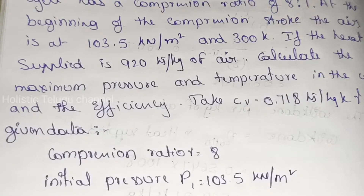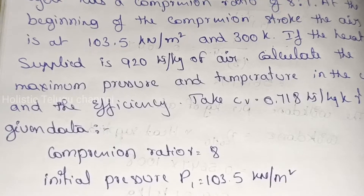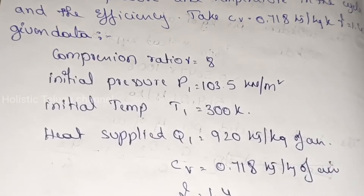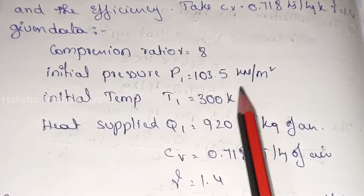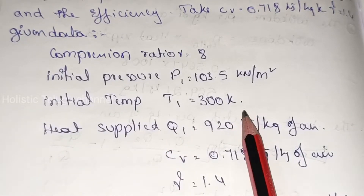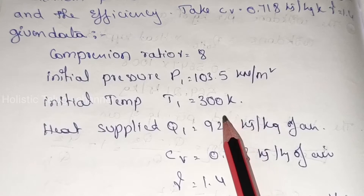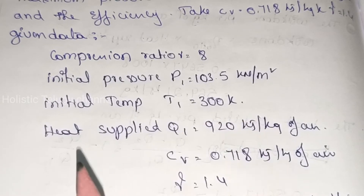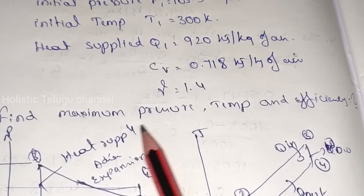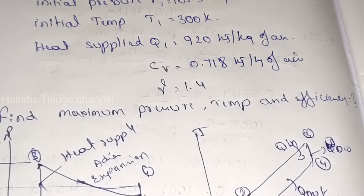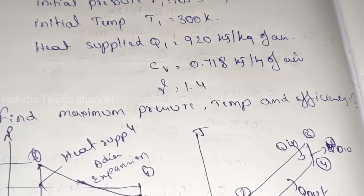So, the given data: compression ratio is 8, initial pressure P1 = 103.5 kN/m², initial temperature T1 = 300 Kelvin, heat supplied Q = 920 kJ/kg, Cv = 0.718 kJ/kg·K. We need to find maximum pressure, maximum temperature, and efficiency.